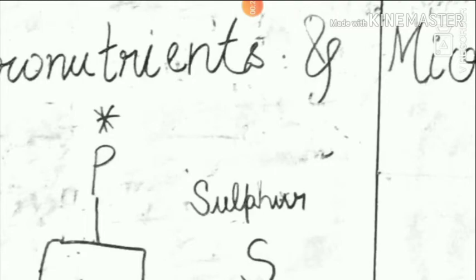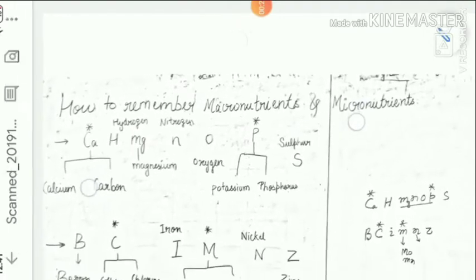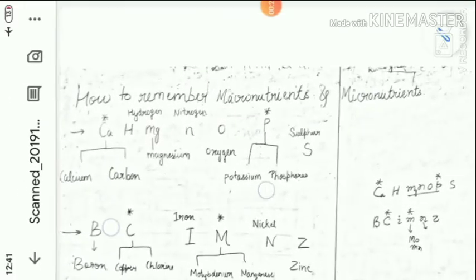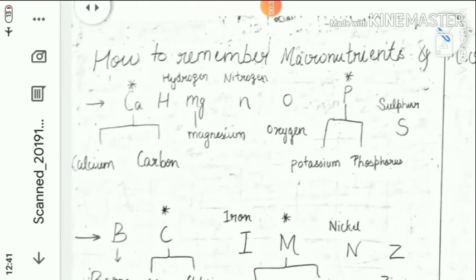But sometimes we face difficulties to remember the names of all these elements. So first of all for macro elements we are making some memory tips, that is suppose this one is C H M N O P S, or C H.